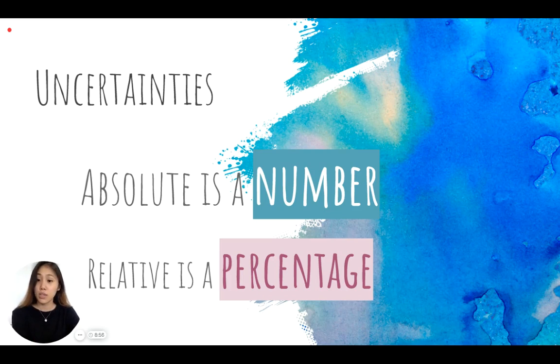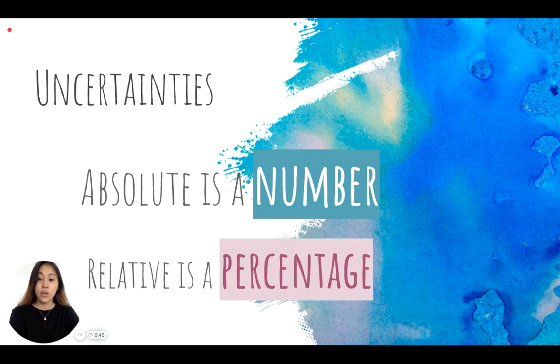Relative uncertainty is a percentage. Today we're going to take a look at how we can convert the usual value that we know, known as absolute, into a percentage uncertainty known as relative.